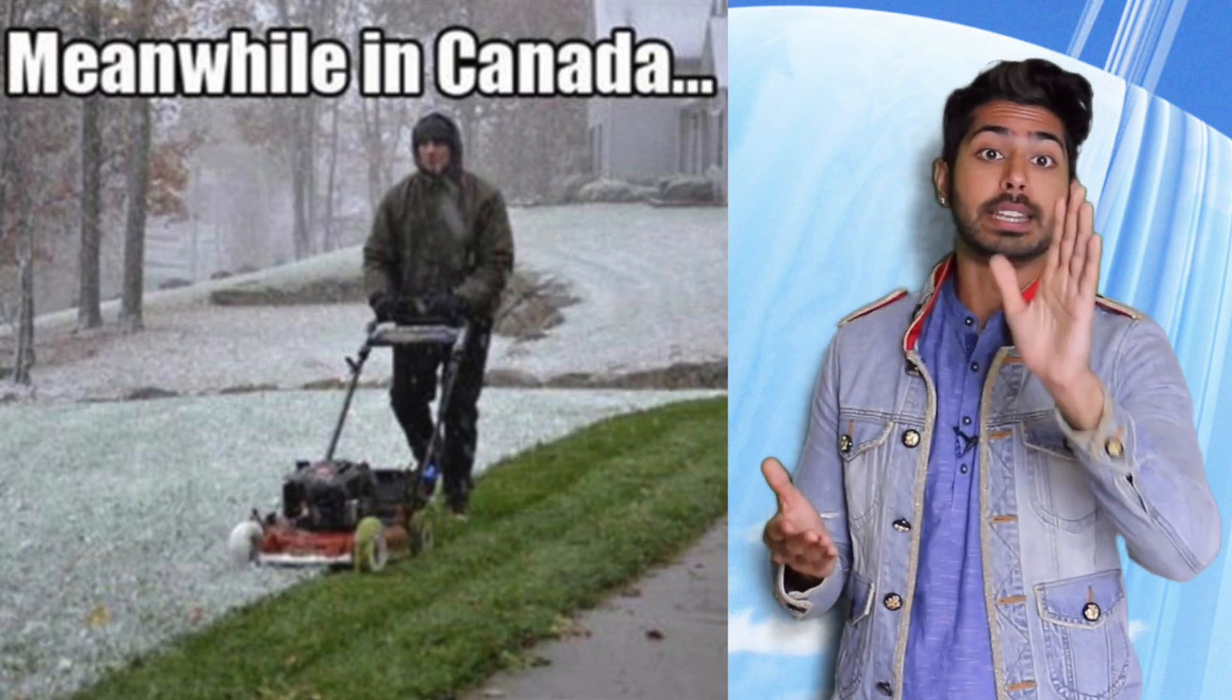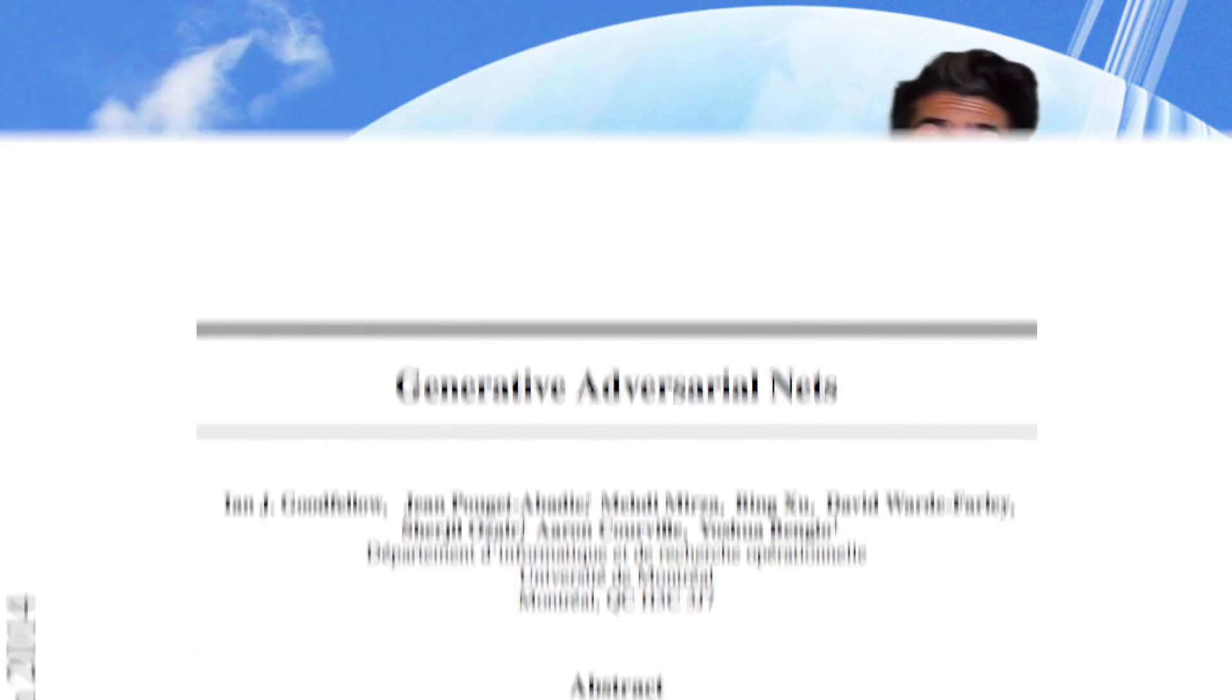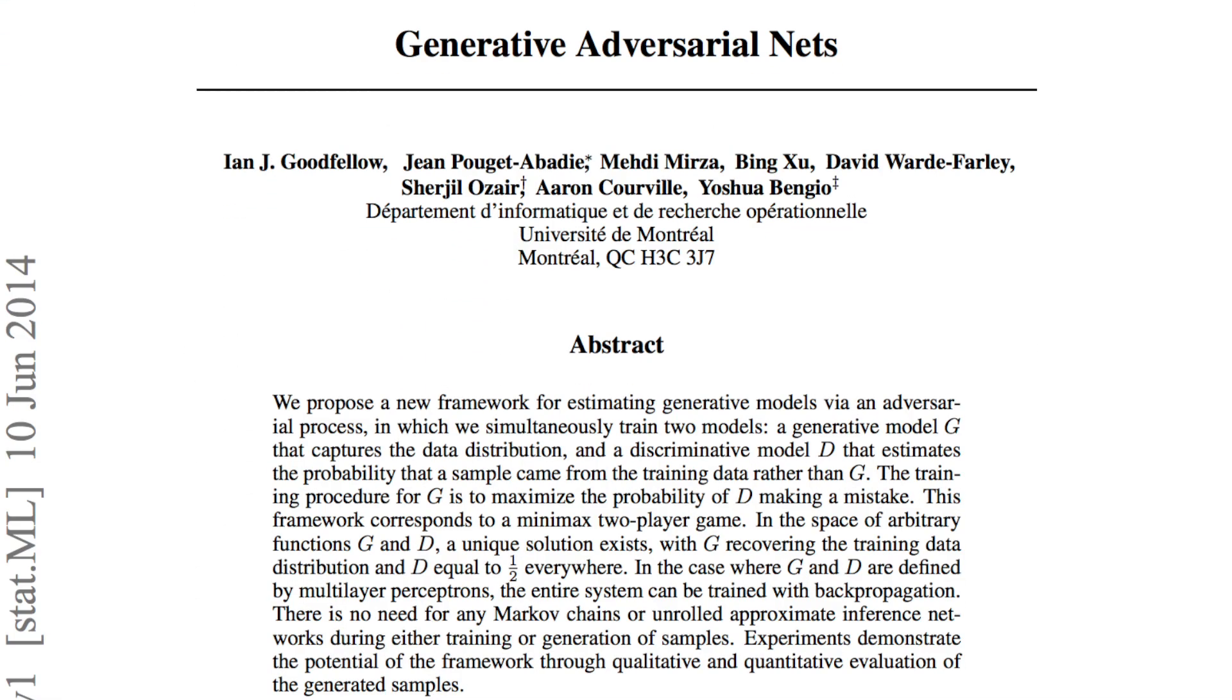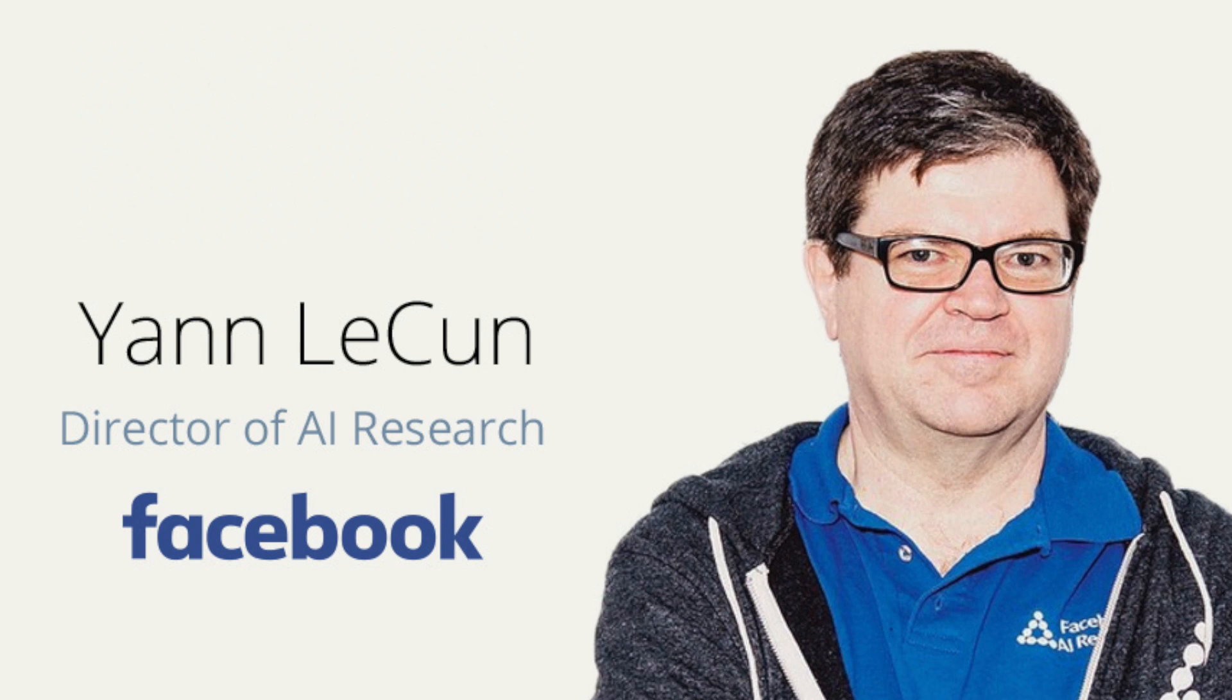In 2014 everyone was drenching themselves in ice water for the ALS challenge. But meanwhile, in Canada, a researcher named Ian Goodfellow published a paper introducing the world to GANs and the AI community loved it. Yann LeCun, the director of AI at Facebook, called it the most interesting idea in the last two decades in machine learning.